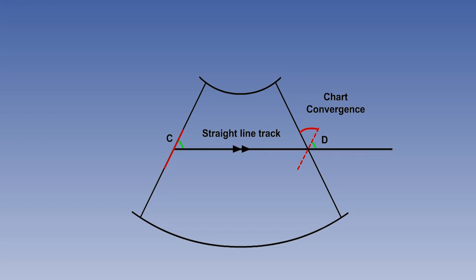Note that for chart convergence, we are considering the change in a straight line. But for Earth convergence, it is the change in a great circle track. The two are only the same thing at the parallel of origin.